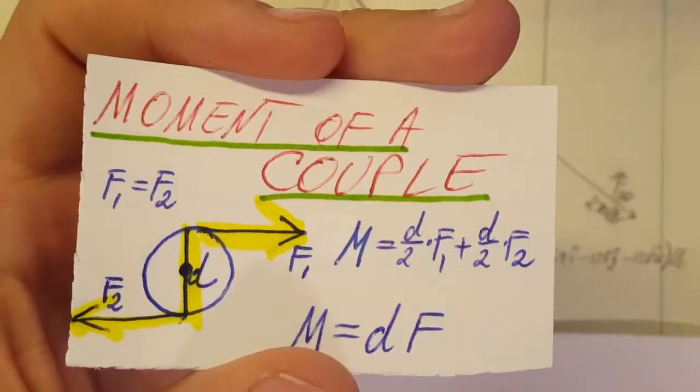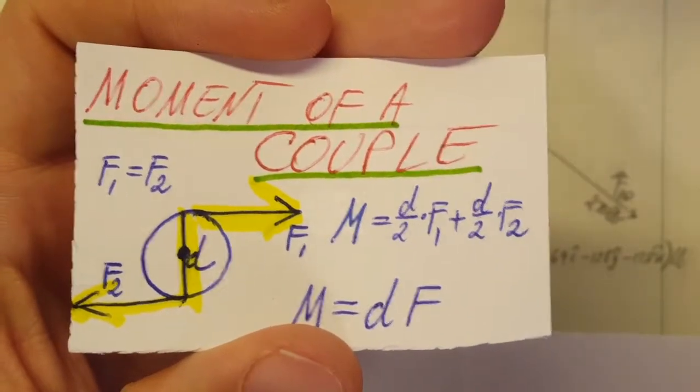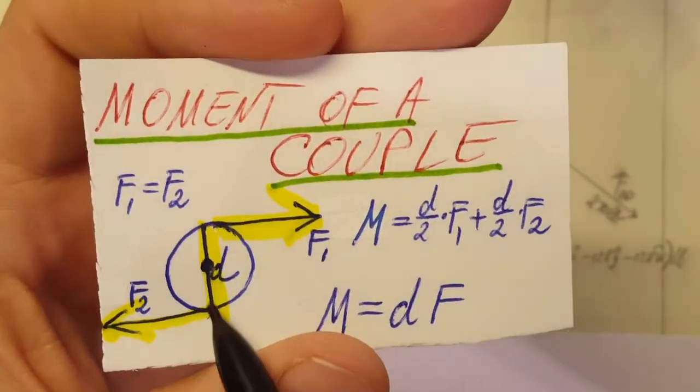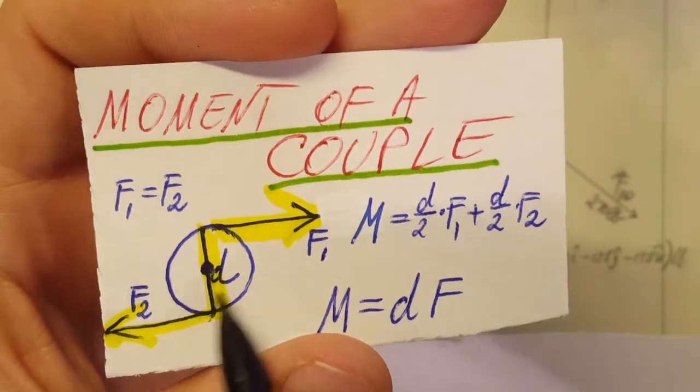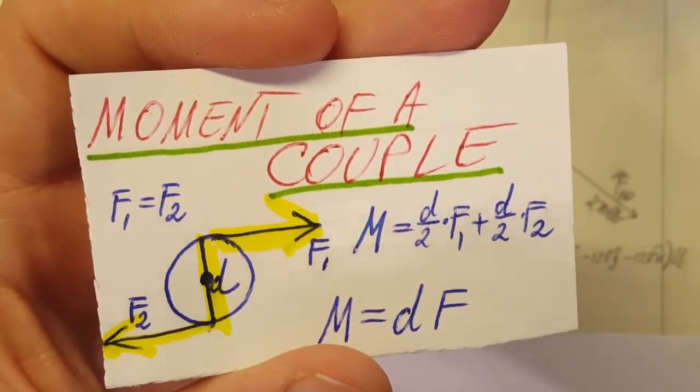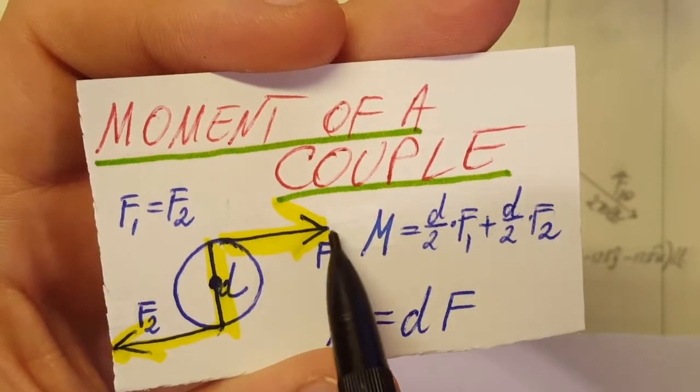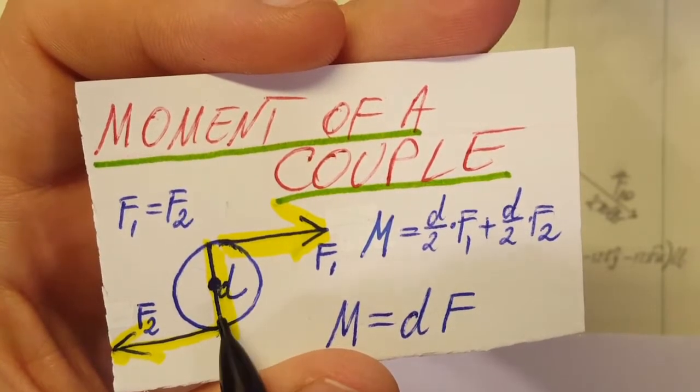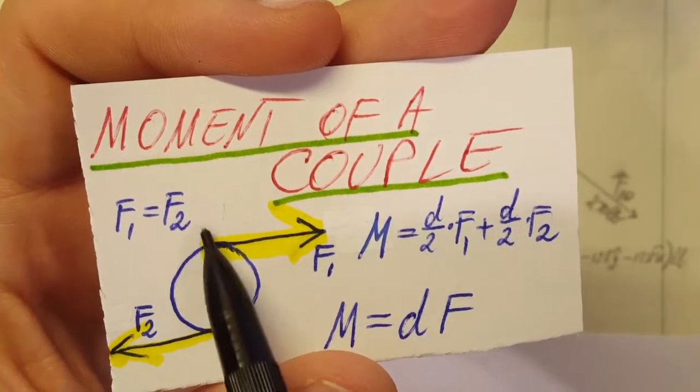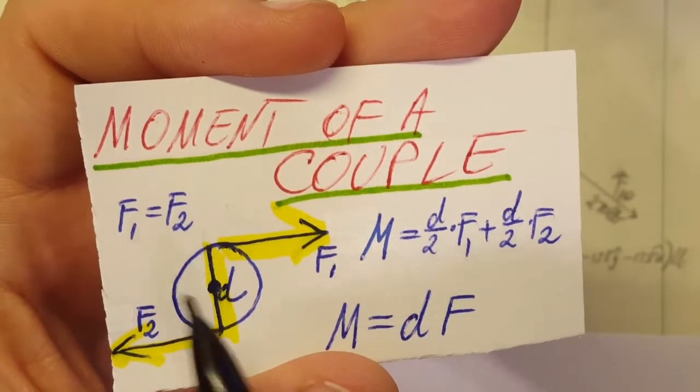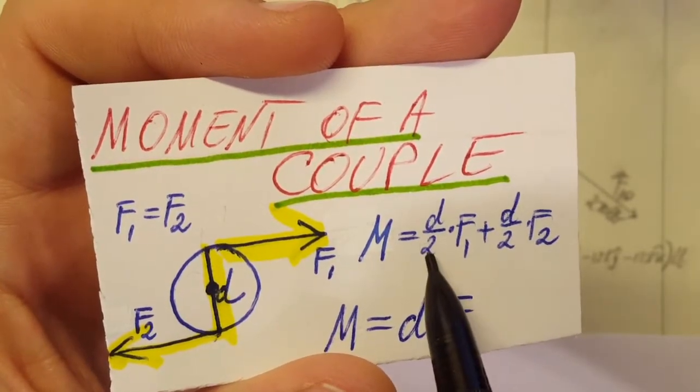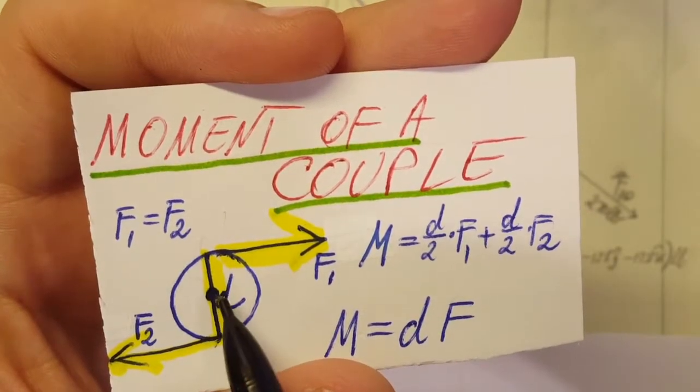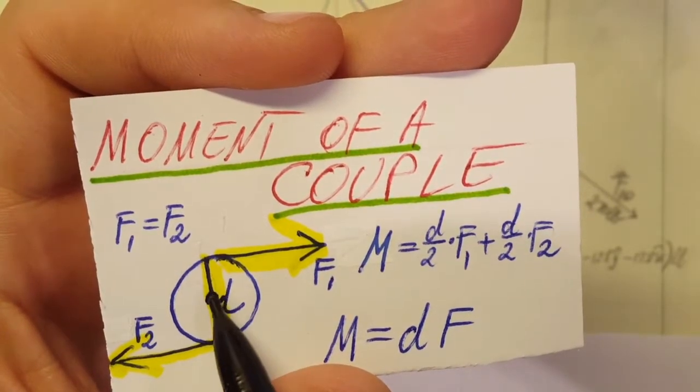Okay, now that we have this, we can go ahead and calculate our moment. So for the moment of a couple, we're gonna refer to this setup. We have this circle or whatever here, and we have force one and force two, and we have a distance between them, the diameter. So the moment around this point would be force one times half of the distance from point O or whatever this is in the center to the force.